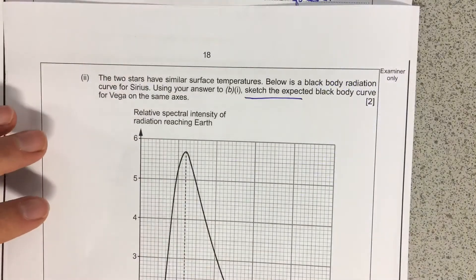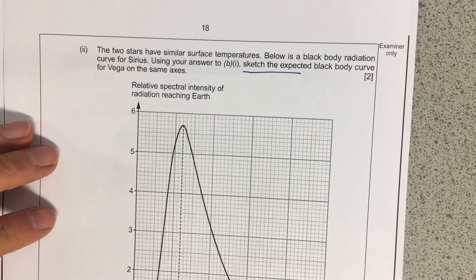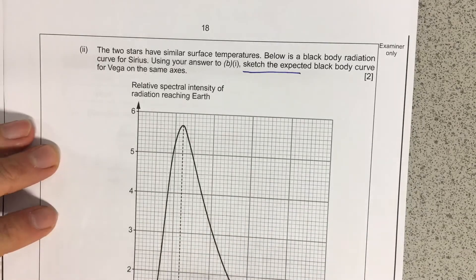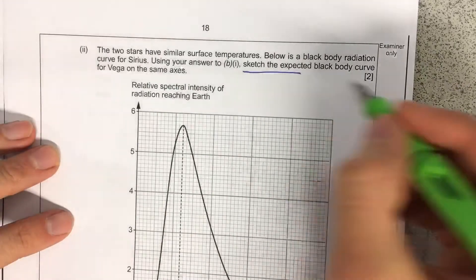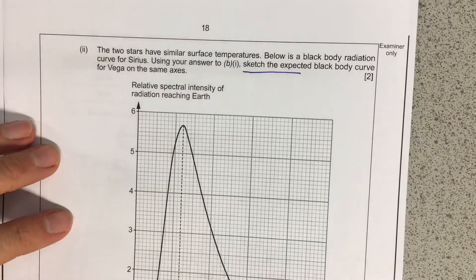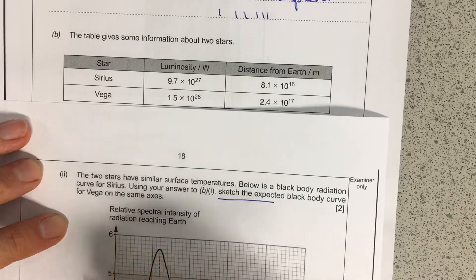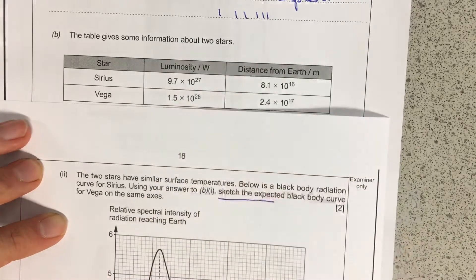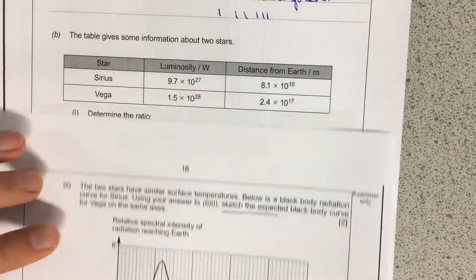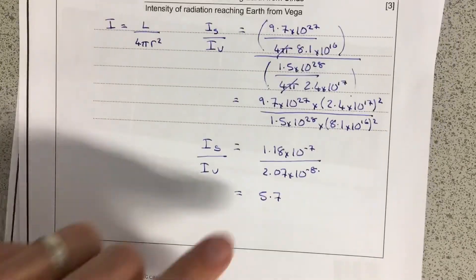This question looks really simple, the next part. It looks really simple at first glances, but it actually relies on us having been able to do the earlier part of the question. So it wants us to sketch the expected black body curve for Vega on the same axes. Now, we've just worked out here that on Earth, so here it says the relative spectral intensity, that's what they want on this side, the relative spectral intensity reaching Earth. And that's what we've just spent time doing. It doesn't want the actual luminosity. It wants us to use this answer that we've just found out down here.